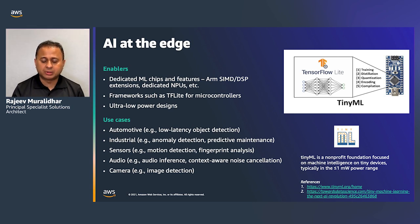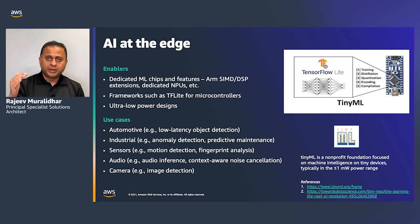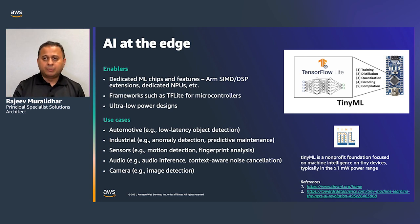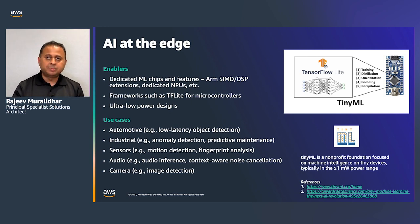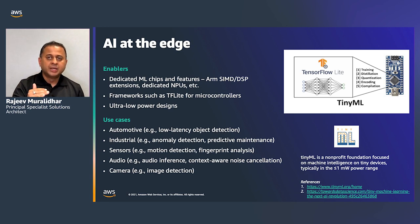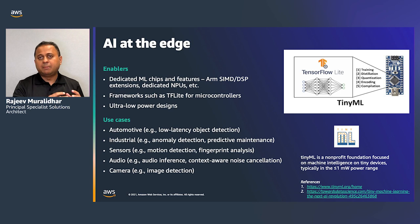The third enabler is improvements in semiconductor process technology. Traditional transistor voltage for CMOS transistors has a particular level below which you cannot do meaningful computation — signals become noise, outputs are unreliable. One of the holy grails of semiconductor research has been to shrink computation down to lower voltage thresholds, called near-threshold or sub-threshold voltage computing. Recent advances have made it possible to reduce CMOS transistor operating voltage to very low levels, consuming much lower power — enabling AI and ML on tiny microcontrollers.